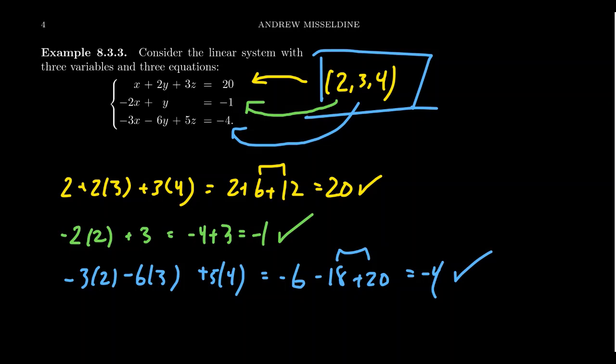So the point (2, 3, 4) is in fact a solution to this system of three equations and three unknowns — we call it a 3×3 system. Much like how we describe matrices, you always count the rows first, giving you the number of equations, then you count the columns, which gives you the number of variables. Try as you might, you're not going to find another solution to this system. This system has a unique solution — exactly (2, 3, 4). The three planes do intersect in three-dimensional space at a unique point.